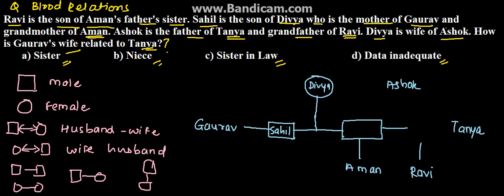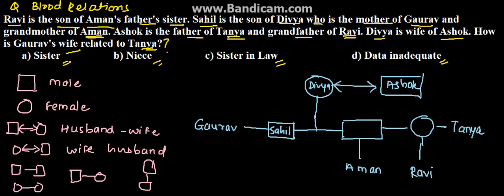Divya is the wife of Ashok. So Divya and Ashok are husband and wife — we will denote this with a two-way arrow. With this the diagram is now completed.